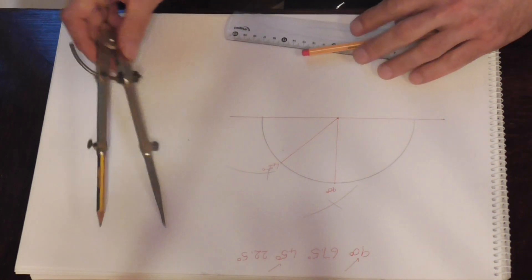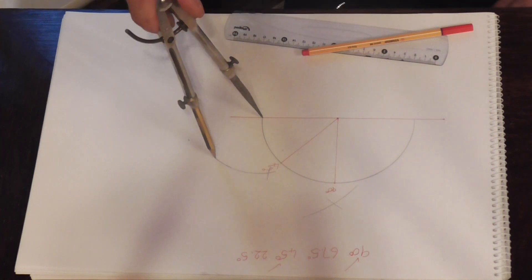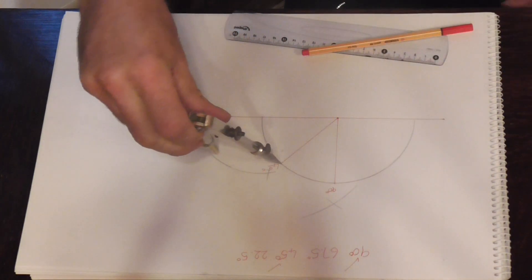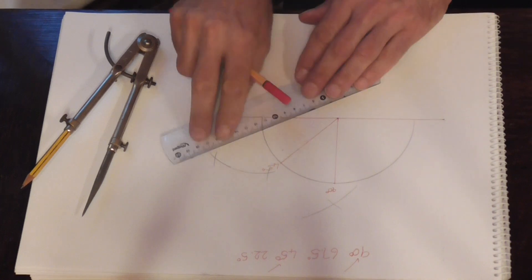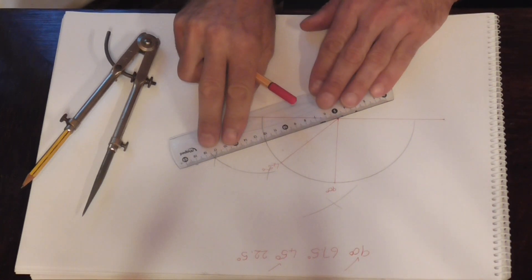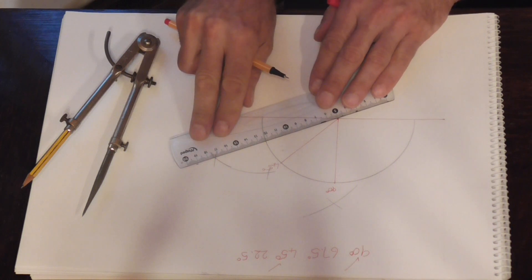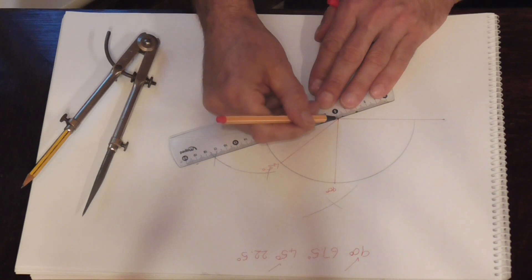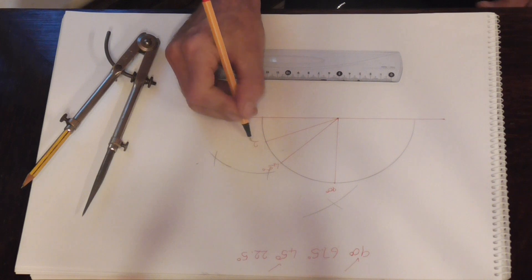Now we are going to do the middle, next one. The middle of there down to the center. That is 22.5 degrees.